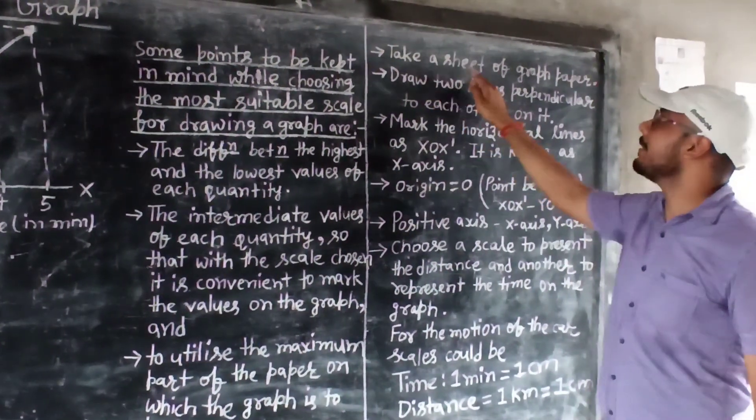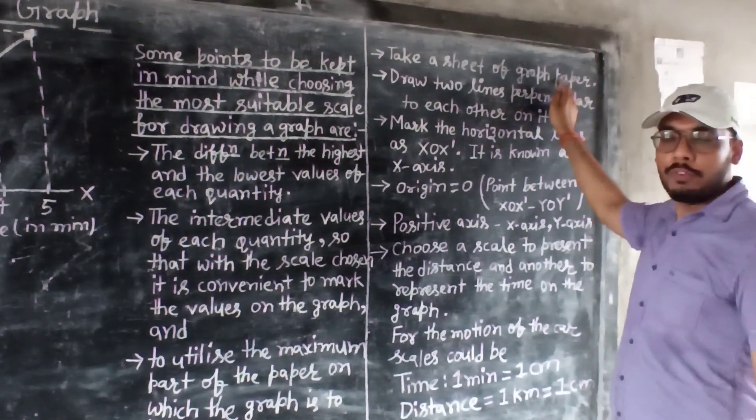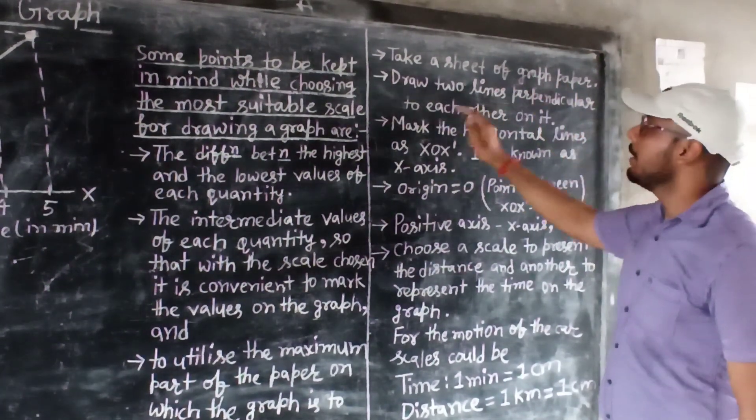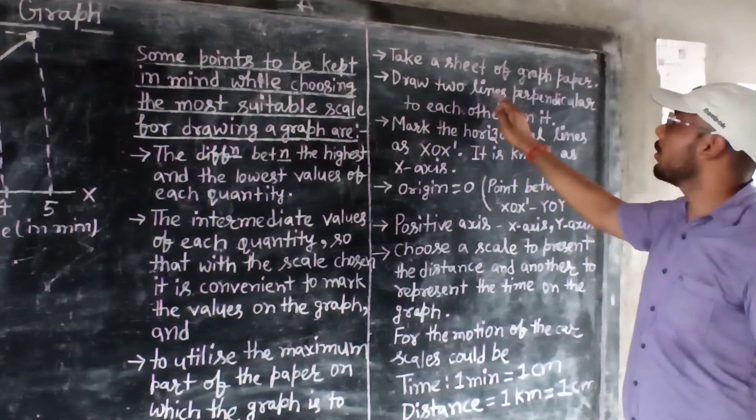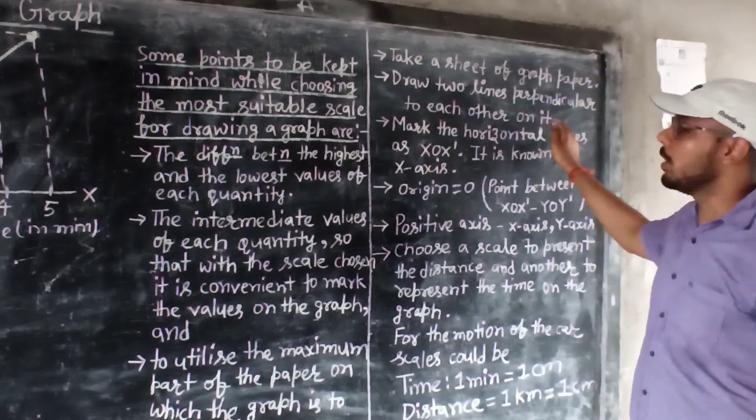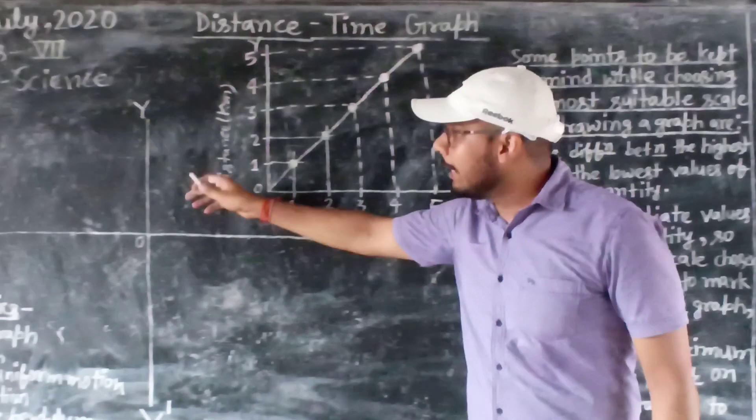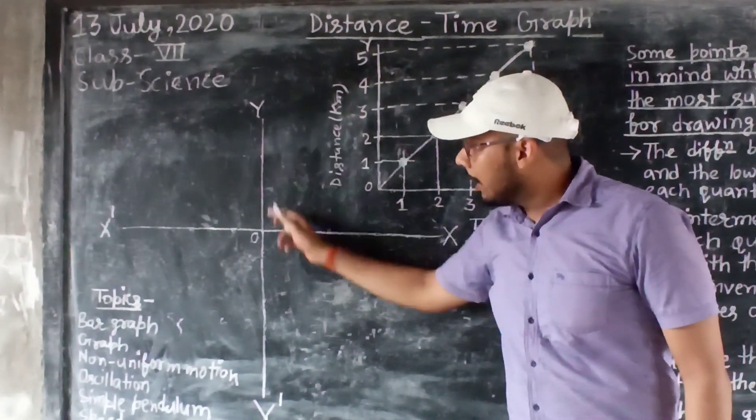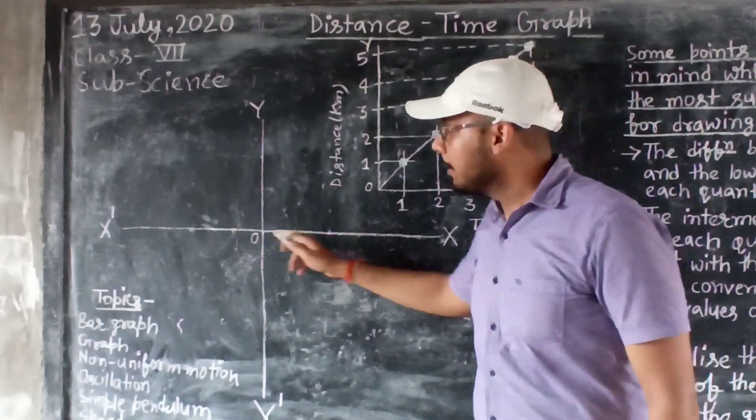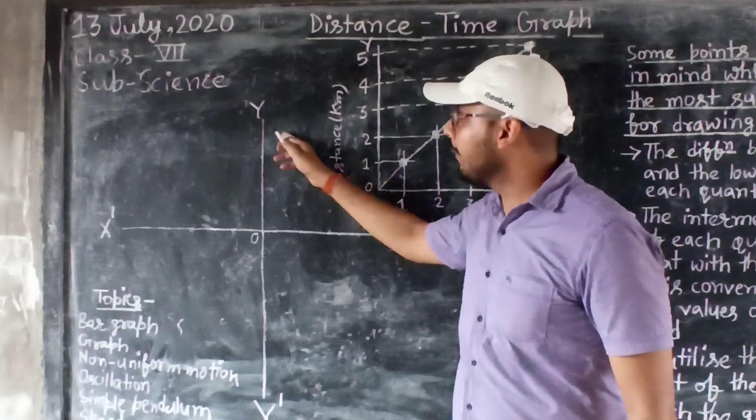First one is, take a sheet of graph paper. So for that we have to take graph paper. After that, we have to draw two lines perpendicular to each other on it. That means you have to draw this one and over there the second one perpendicular line.